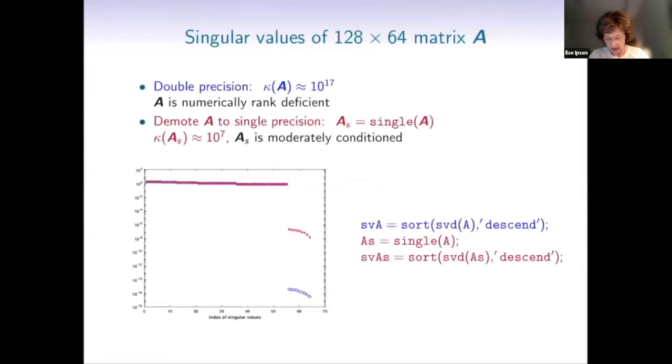So here's the problem. We have a matrix 128 by 64. In double precision, its condition number is 10 to the 17. It's numerically rank deficient. In single precision, its condition number is drastically better, 10 to the 7, and the matrix is moderately conditioned. So we are getting our matrix here from a particular context. We are preconditioning least squares problems and the preconditioners are randomized and constructed with uniform sampling. This is a best case preconditioner. We have here a lot of the singular values are one and a bunch of them are 10 to the minus 16 in double precision. And in single precision, they are just 10 to the minus 8.